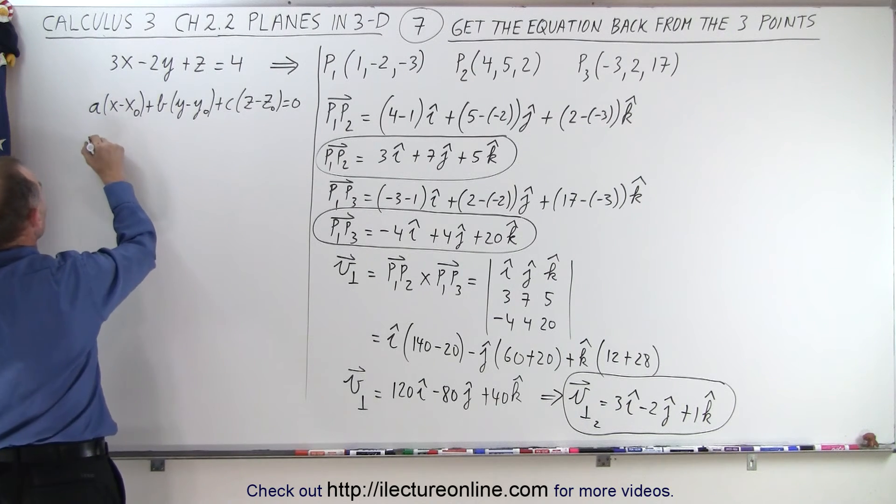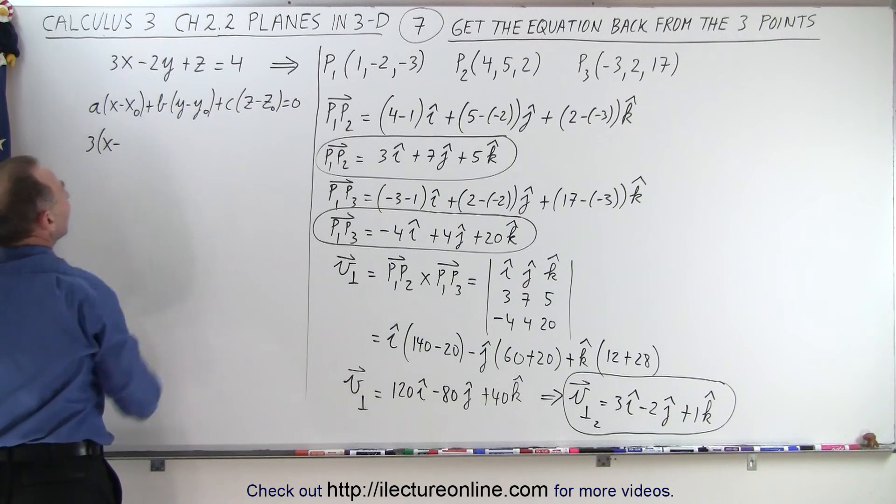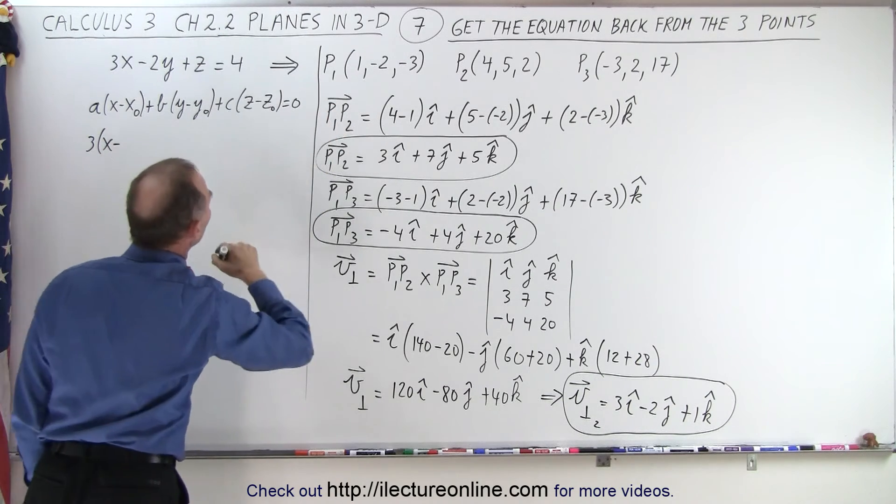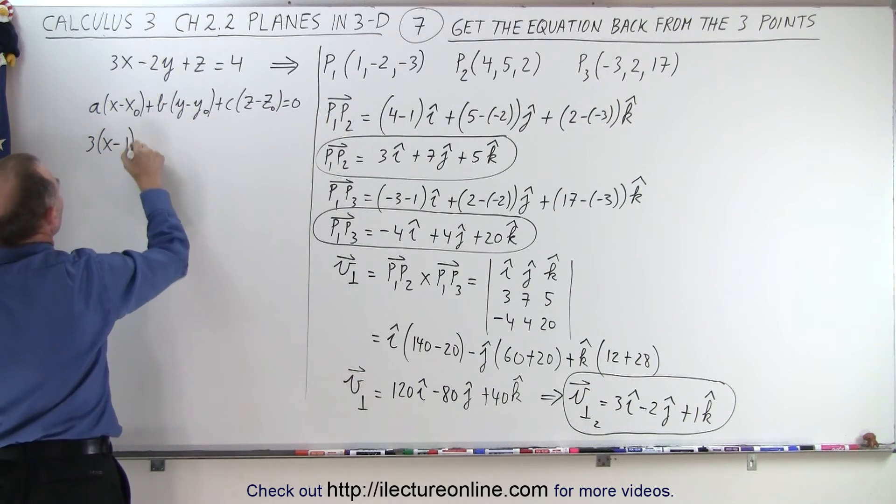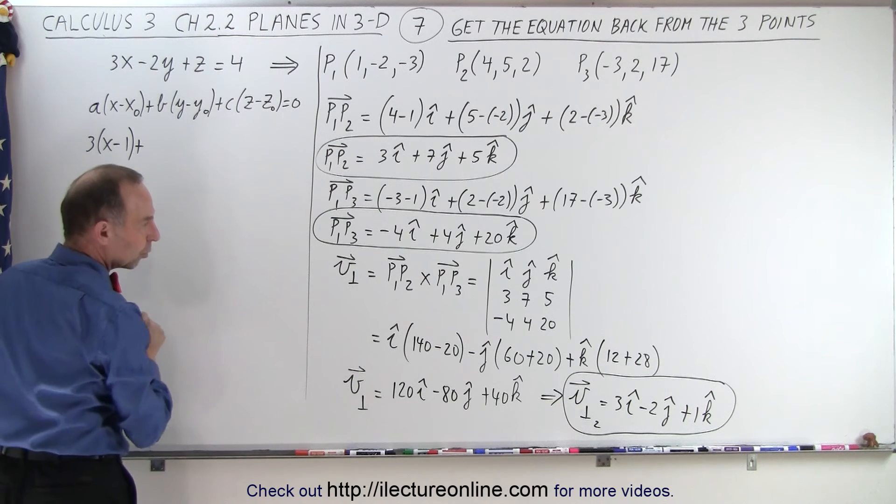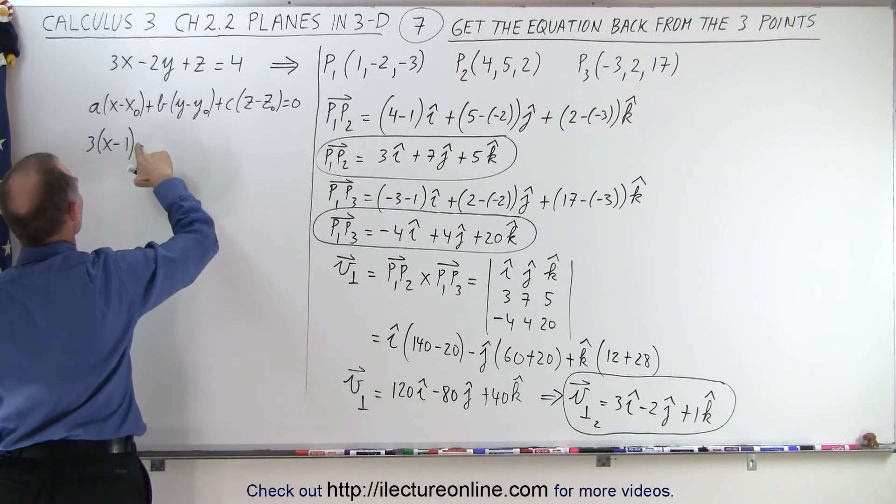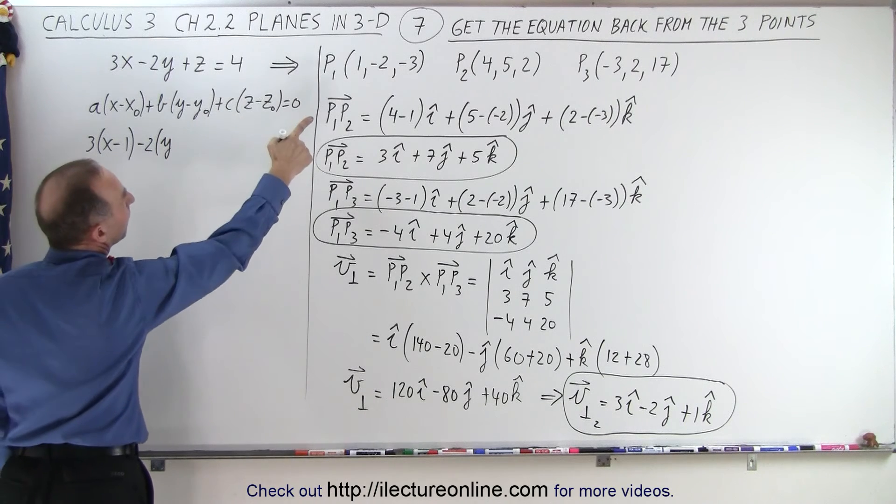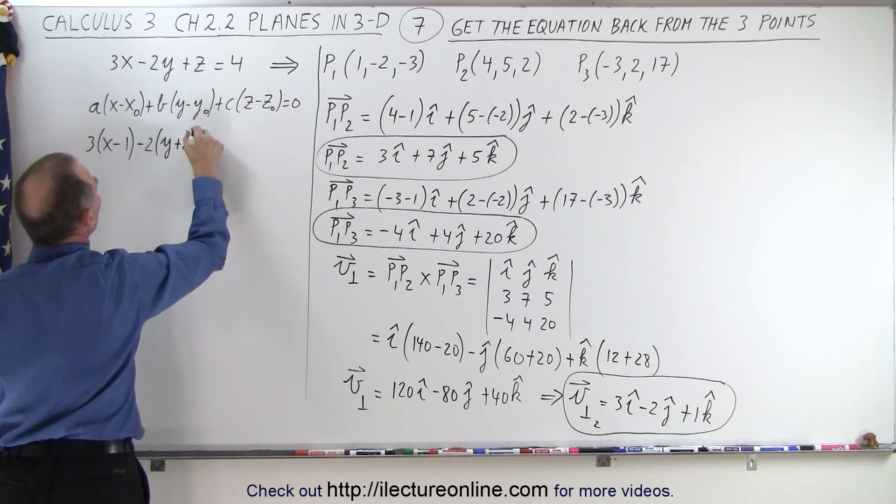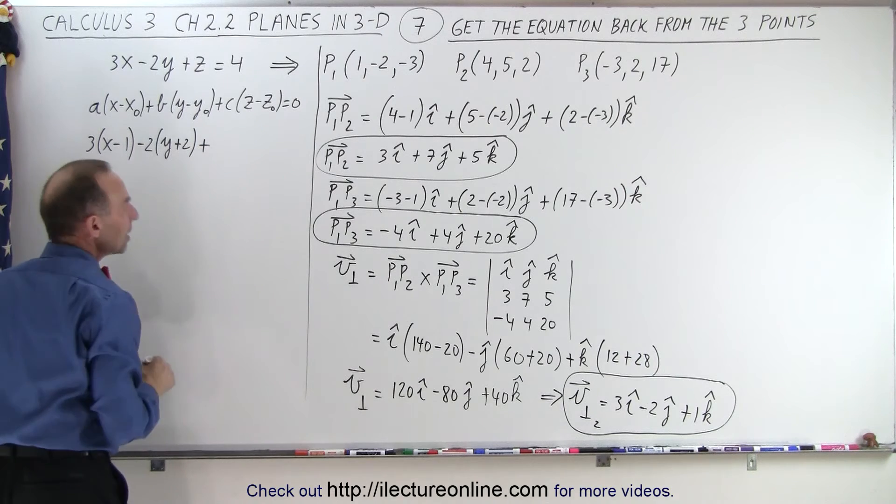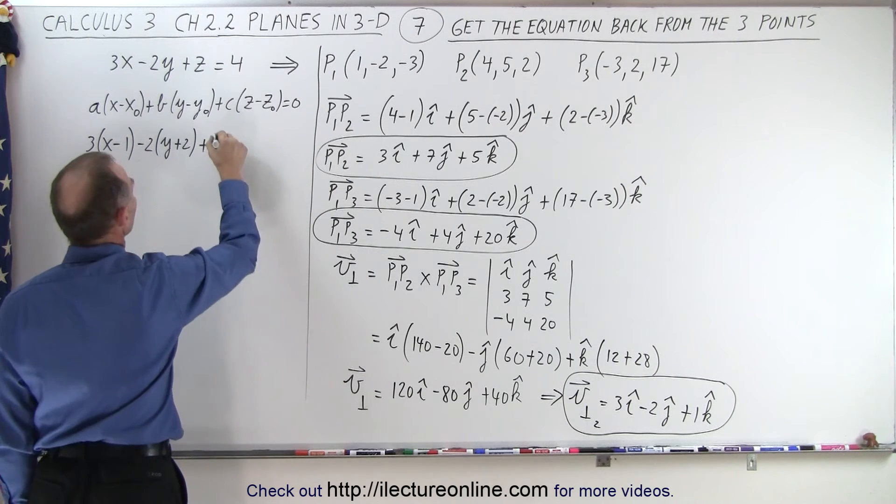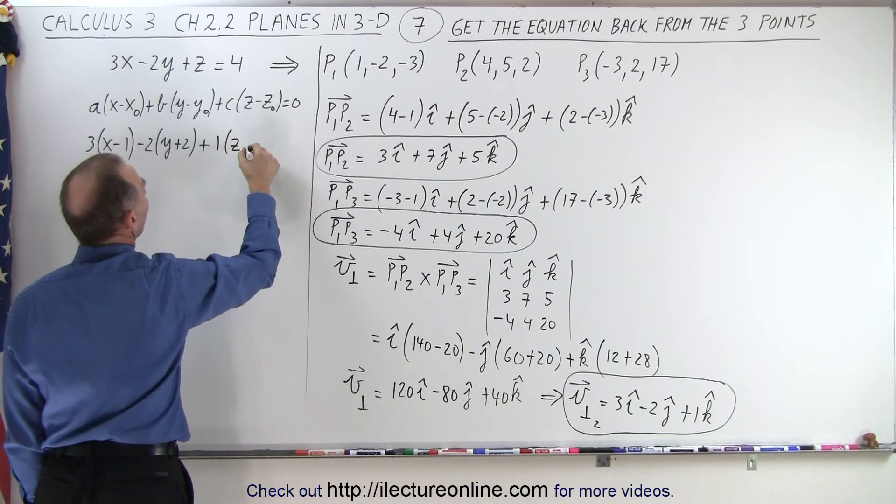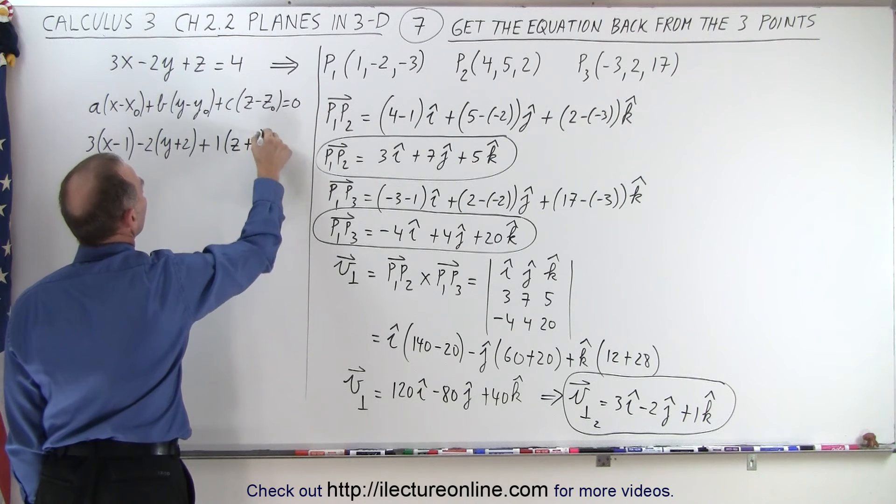So for a, we get 3 times x minus x sub naught. So let's take our first point right here, which is minus 1, plus b, which is minus 2, so convert this to a minus, minus 2 times y minus a minus 2, that would be plus 2, and plus c, c is a plus 1, times z minus a minus 3, that would be plus 3, equals 0.